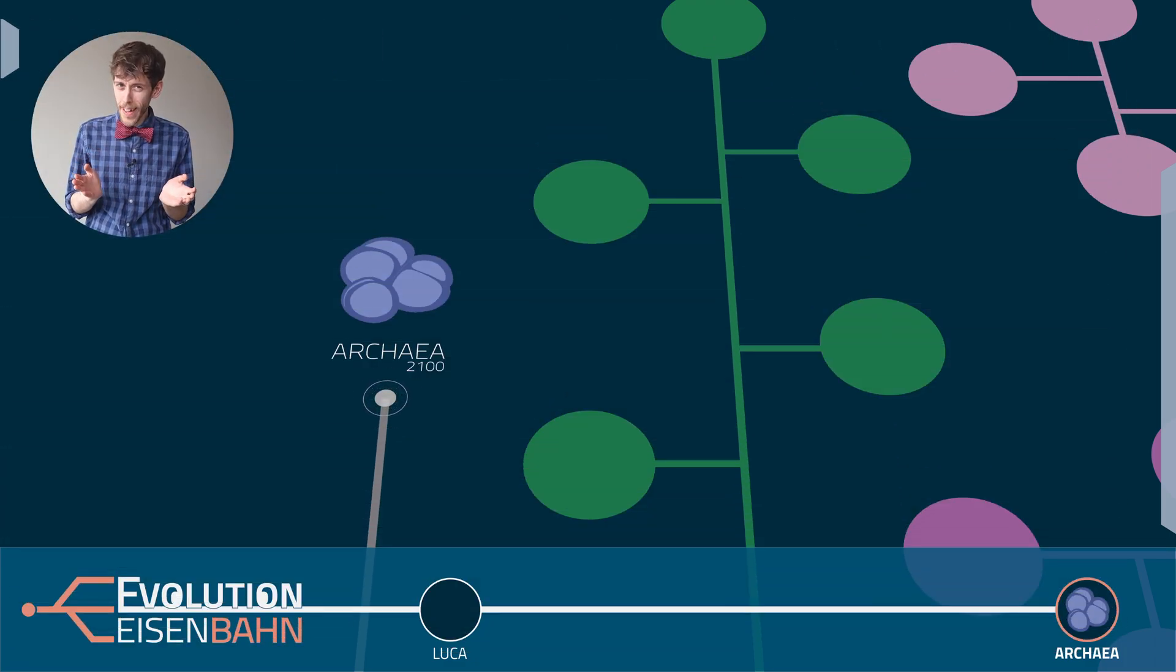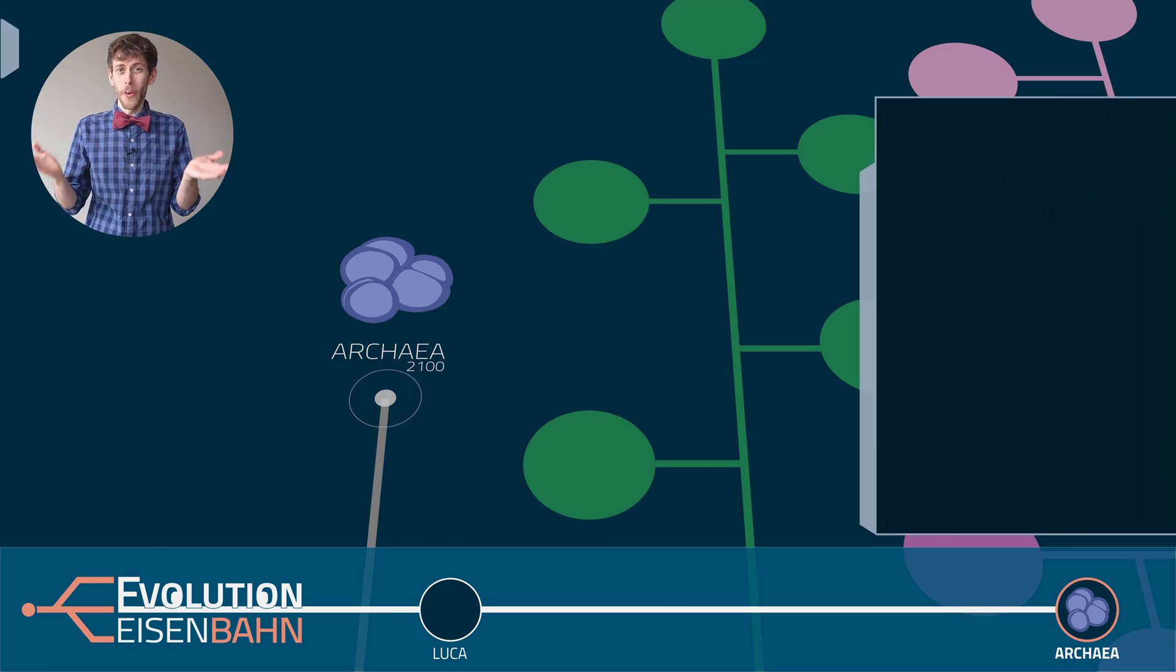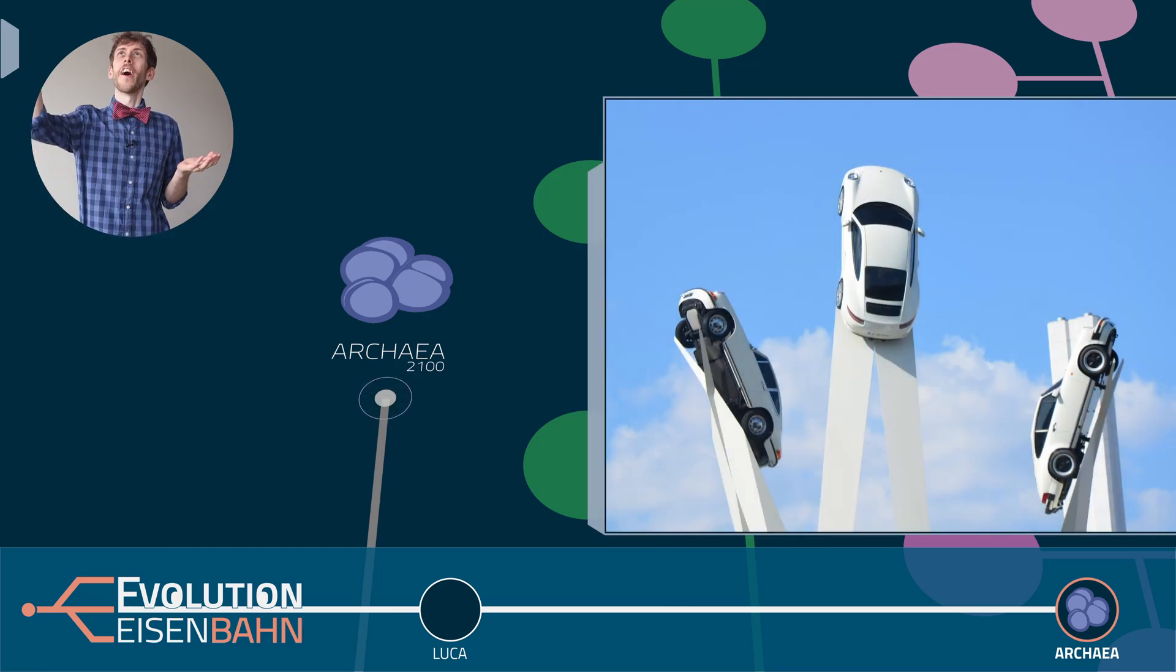So how was that? Archaea are supposed to be primitive life forms outcompeted by bacteria and eukaryotes? As if! If anything, they are more successful than the other two domains, right? Because they can live everywhere they can, plus they can live in these extreme environments. They are not horses, they are flying cars, and somehow we never looked up and saw them.